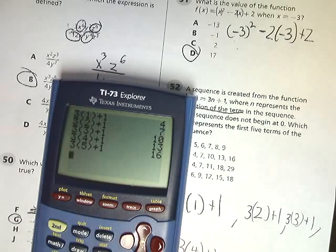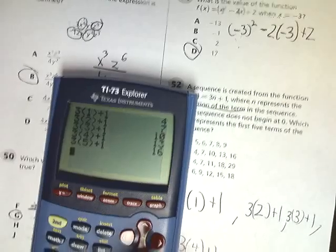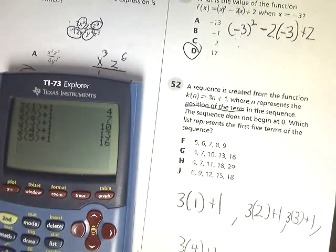4, 7, 10, 13, and 16. So that looks like answer G for number 52. So 52 is G.